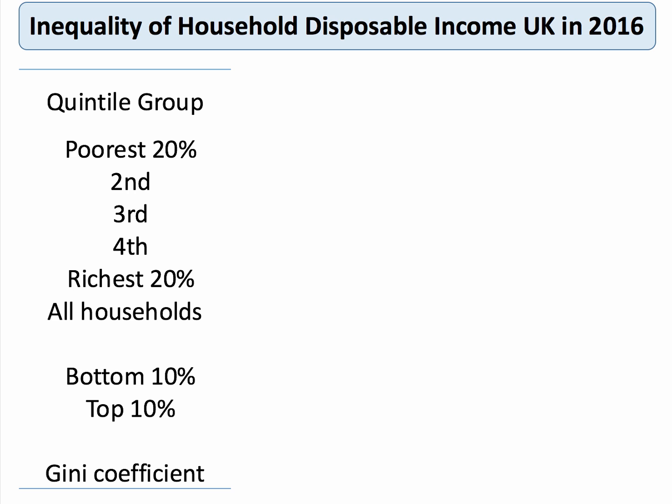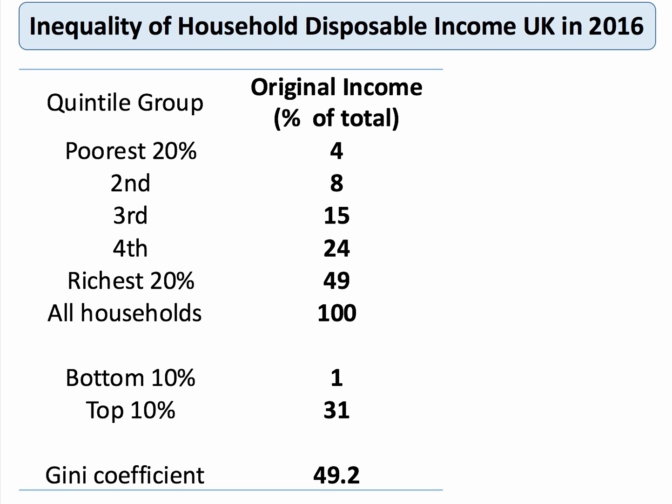Before we get to data from various countries, let's have a look at some data from the UK. We divide our population up into quintiles, so the first quintile is the poorest 20% of the population through to the richest 20%, which is the top quintile. I'll also give you some data on the bottom 10% and the richest 10%.